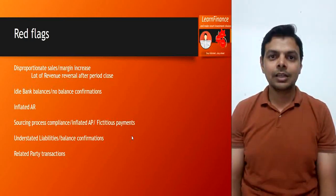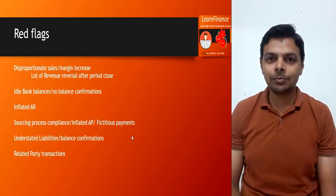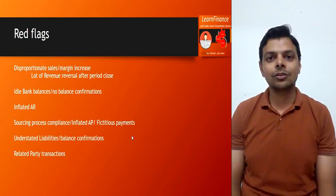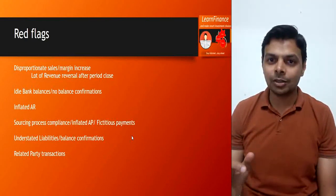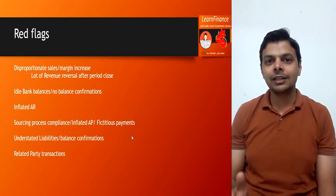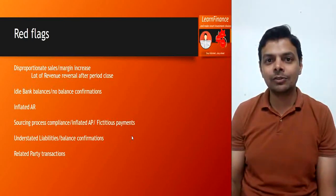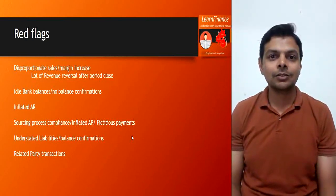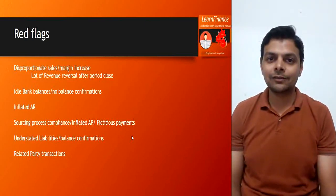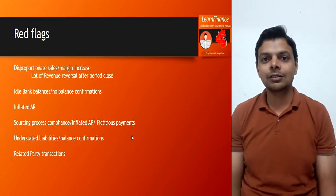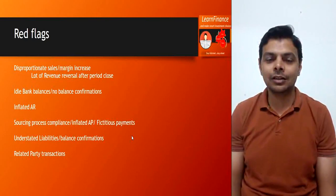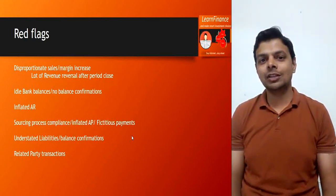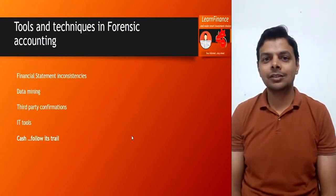Another area of concern is related party transactions. If there are significant related party transactions, they must be thoroughly evaluated — first for commercial substance, and second for any cash flow movement accompanying them. The P&L flow and cash flow must be matched, and a commercial test must be applied to all related party transactions.